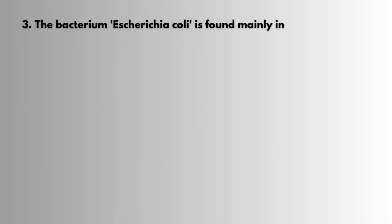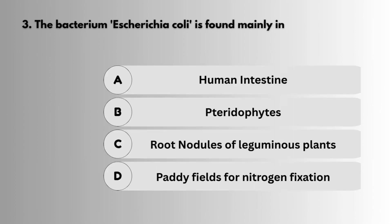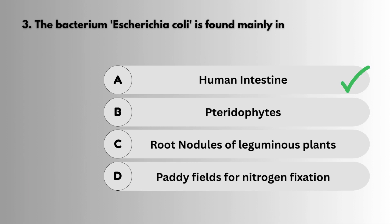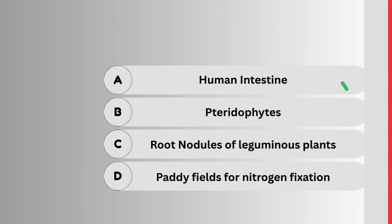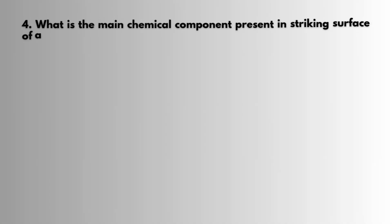Question 3: The bacterium Escherichia coli is found mainly in? Question 4: What is the main chemical component present in the striking surface of a matchbox?